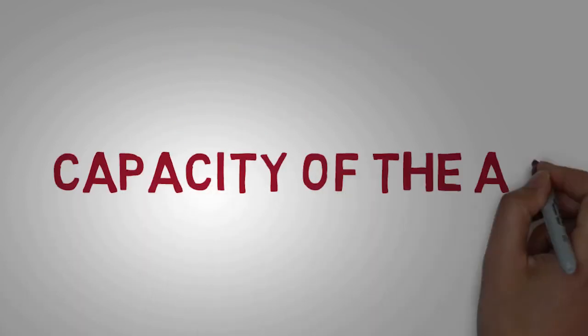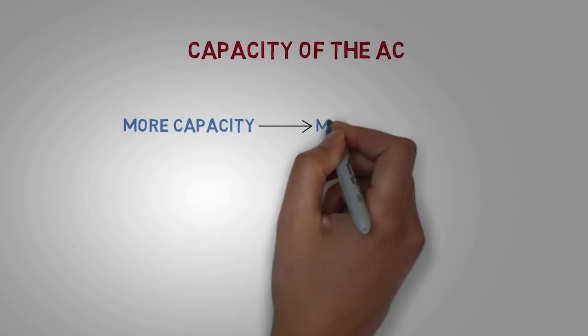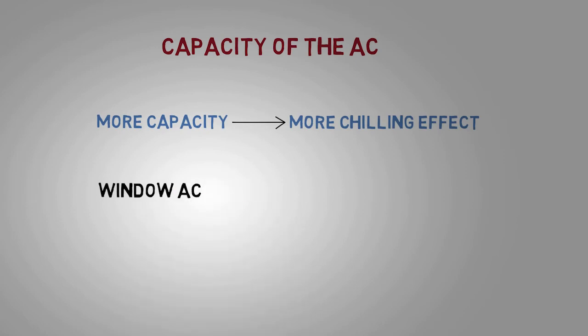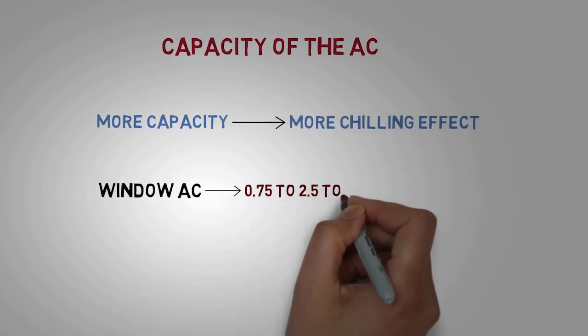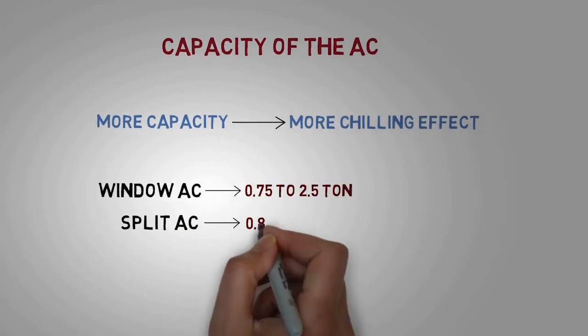Capacity of the AC: The chilling effect of the AC is mostly dependent on its capacity. The capacity of window AC ranges from 0.75 to 2.5 ton, and the capacity of split AC ranges from 0.8 to 3 ton.